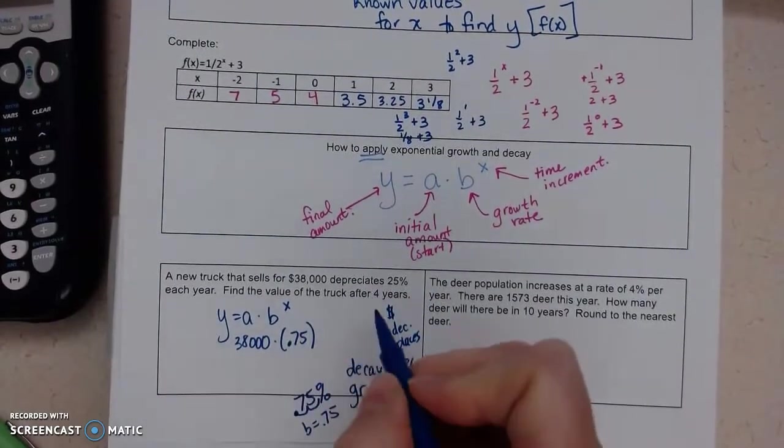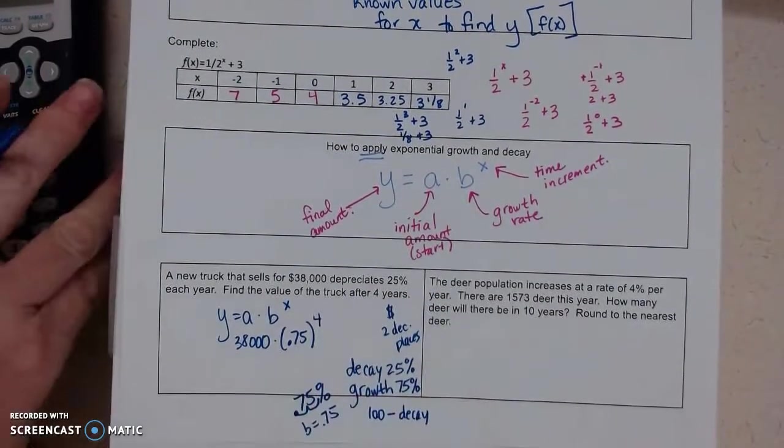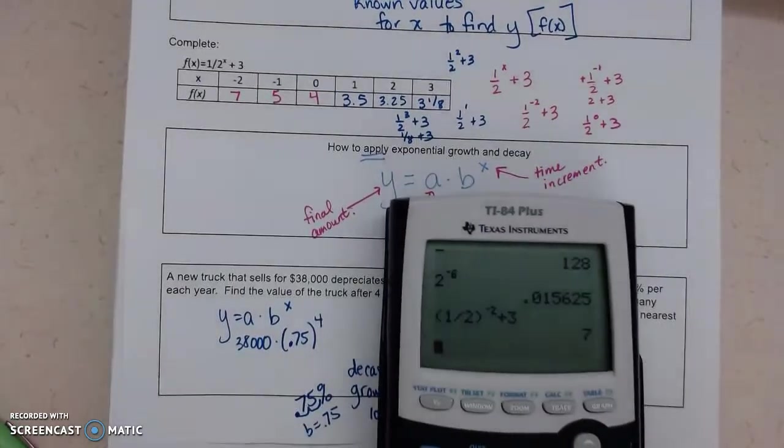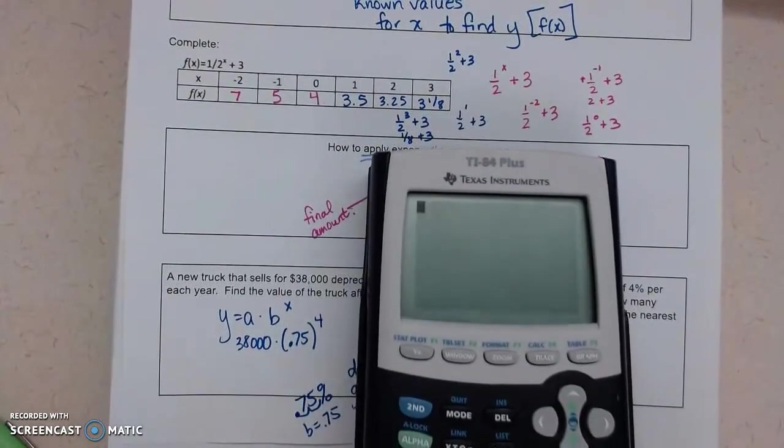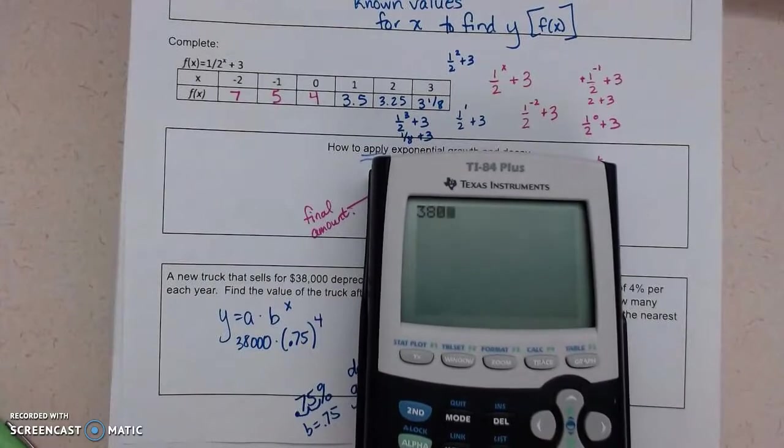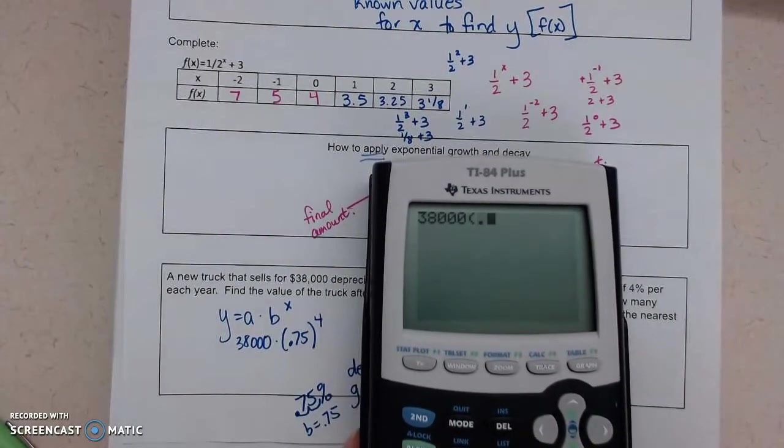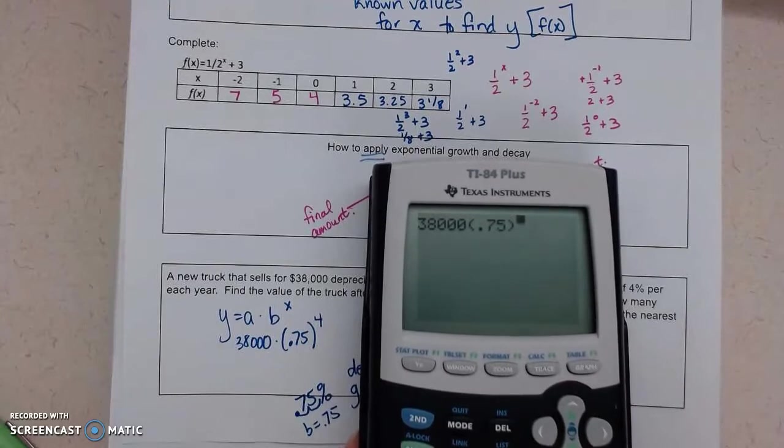And then x is the time. We're talking about four years. So now we do not do this by hand. You're going to need to grab a calculator. You can use one online. We've got 38,000 times 0.75 to the fourth.